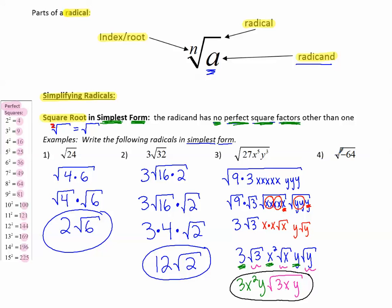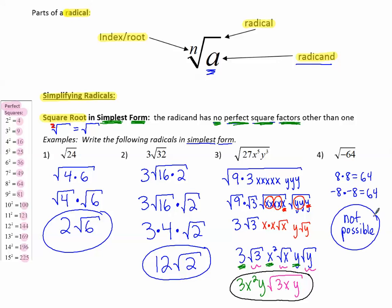Number 4: square root of negative 64. We know 64 is a perfect square (8 times 8), but what multiplied by itself gives negative 64? 8 times 8 gives positive 64, and negative 8 times negative 8 also gives positive 64. We cannot multiply two of the same number to get negative 64, so this is not possible in the set of real numbers.